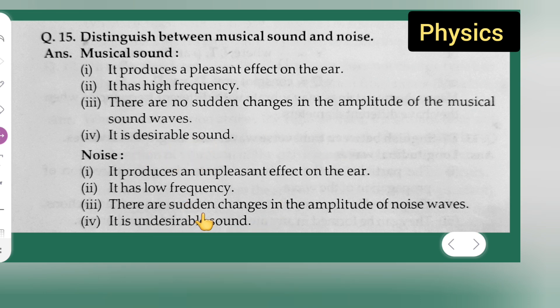Here this one is desirable sound. This is undesirable sound. This produces pleasant effect - here it produces the pleasant effect. Here it produces the unpleasant effect.